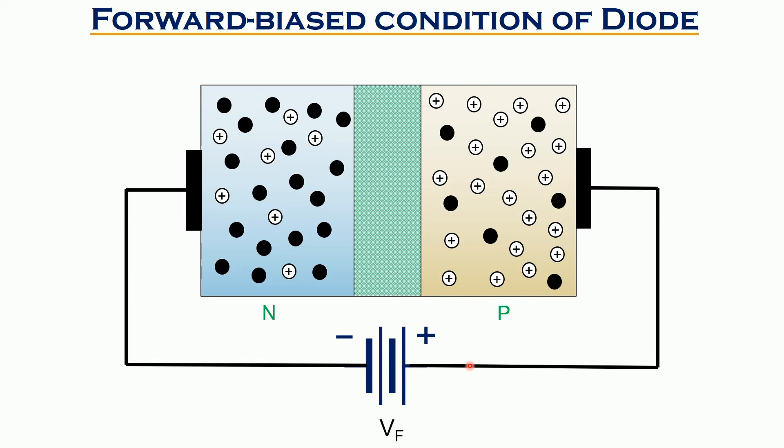The figure here shows that the positive potential of the battery is connected to P side and the negative potential of the battery is connected to N side, thus making it a forward biased diode.